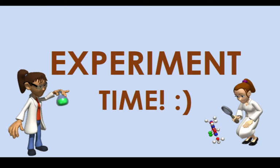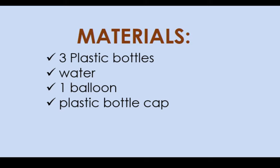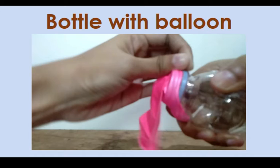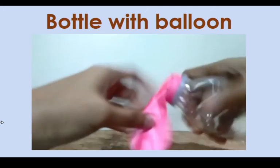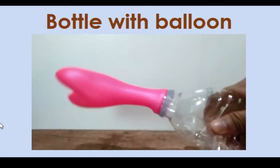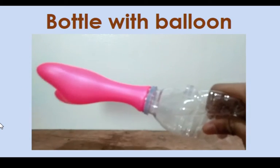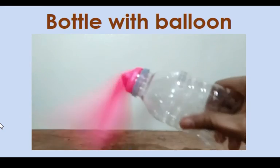We will proceed with the experiment. For this experiment, you have to prepare the following materials: three plastic bottles, water, one balloon, and the plastic bottle cup. For the first setup, we have a bottle with balloon. Putting a balloon on top of the bottle, what happens to the balloon when you squeeze the bottle? Again, what happens to the balloon when you squeeze the bottle?